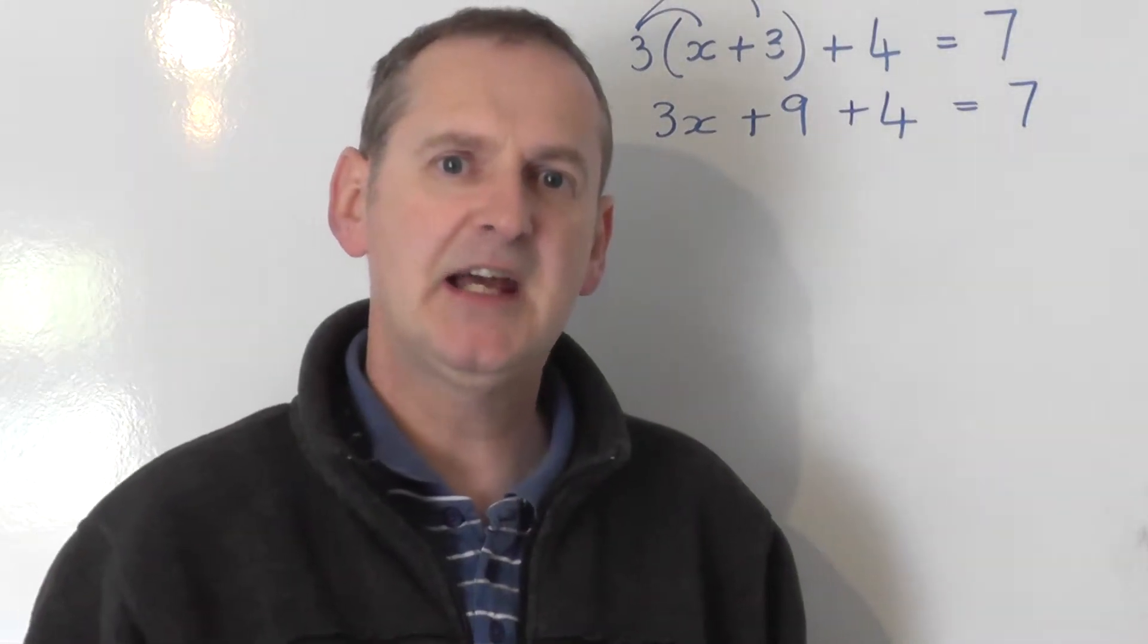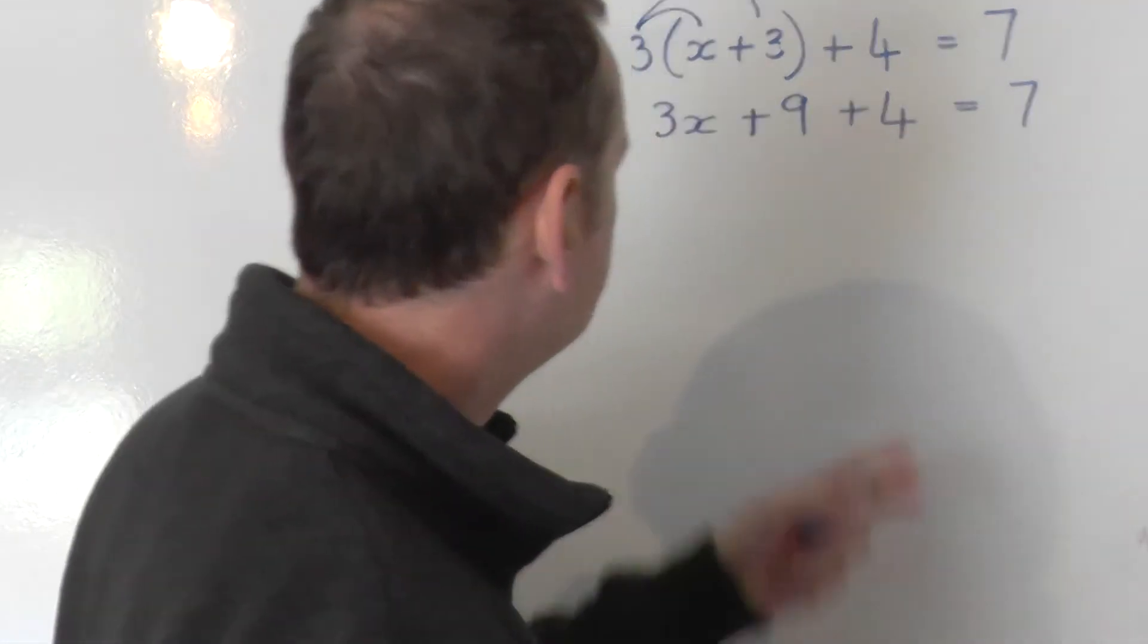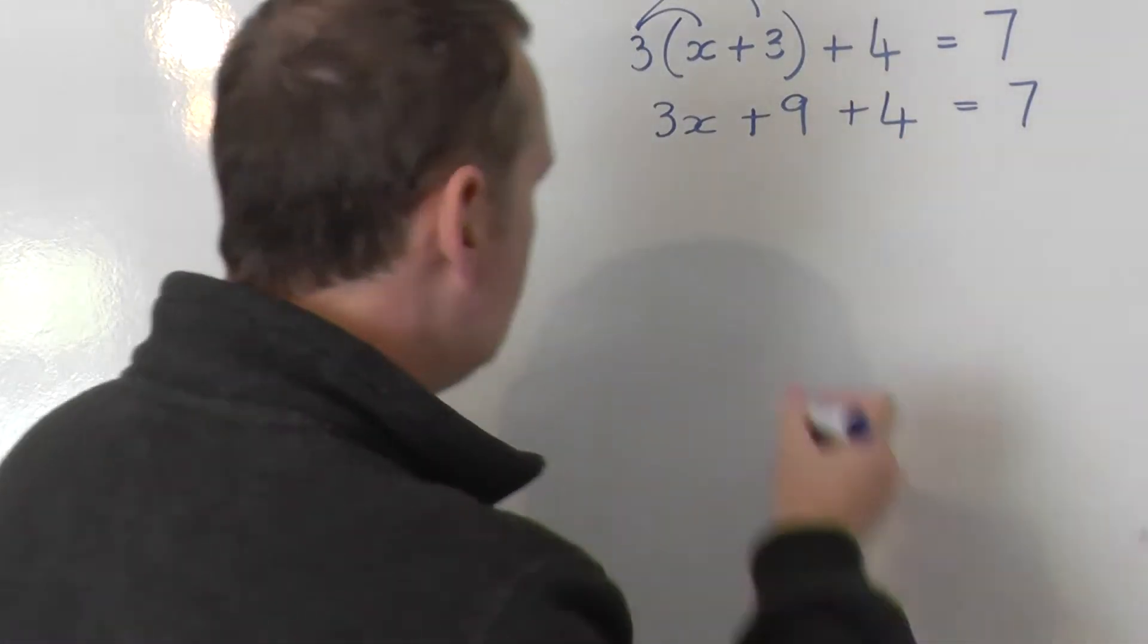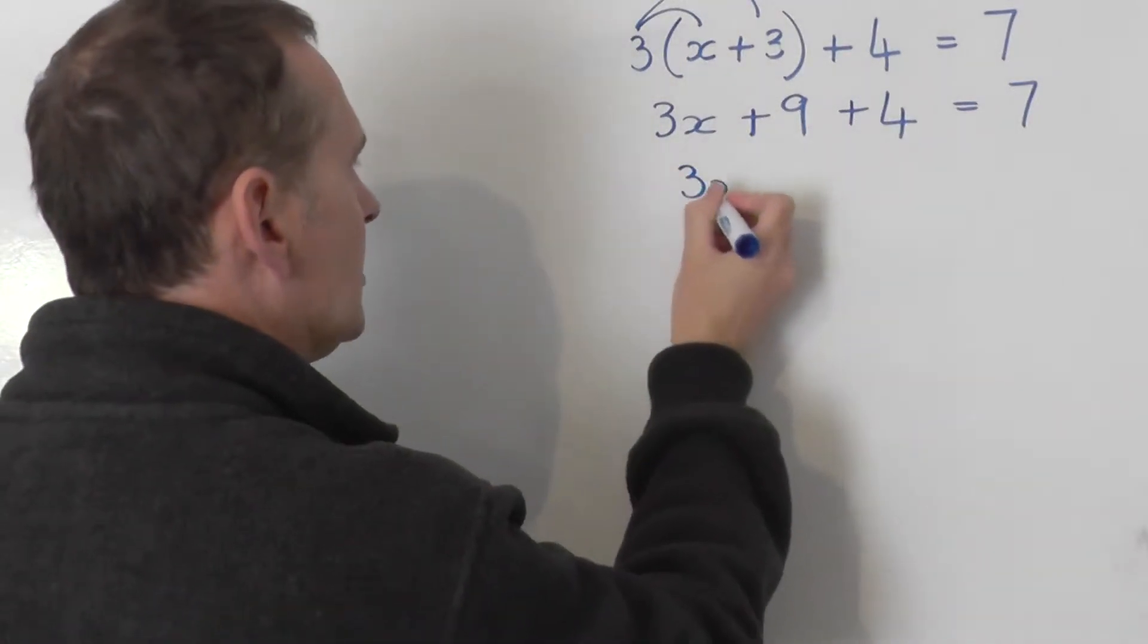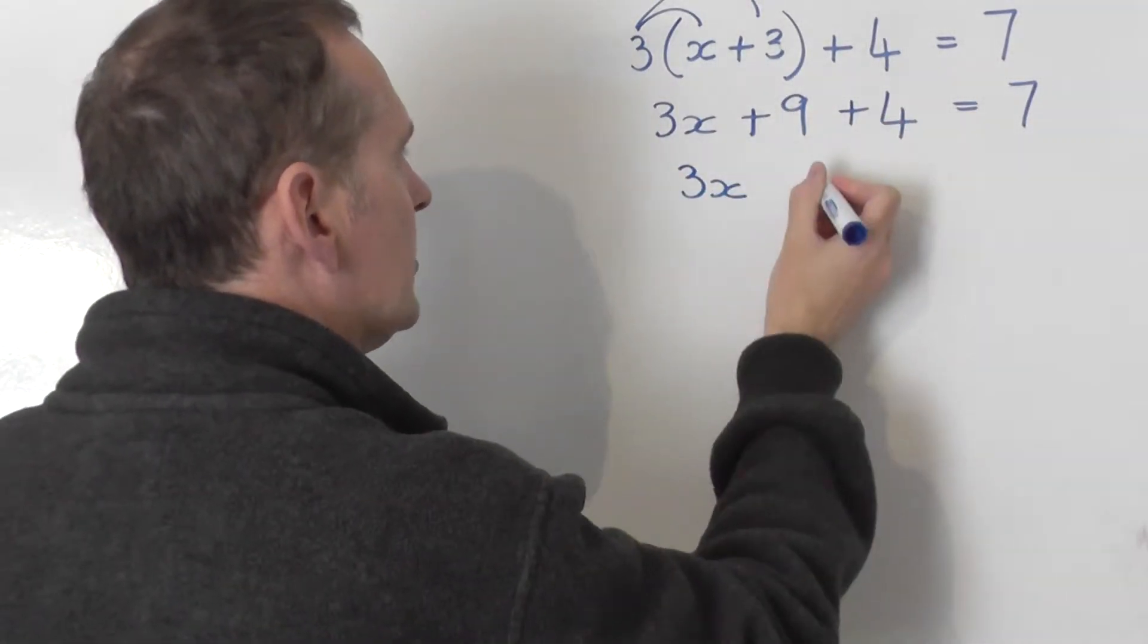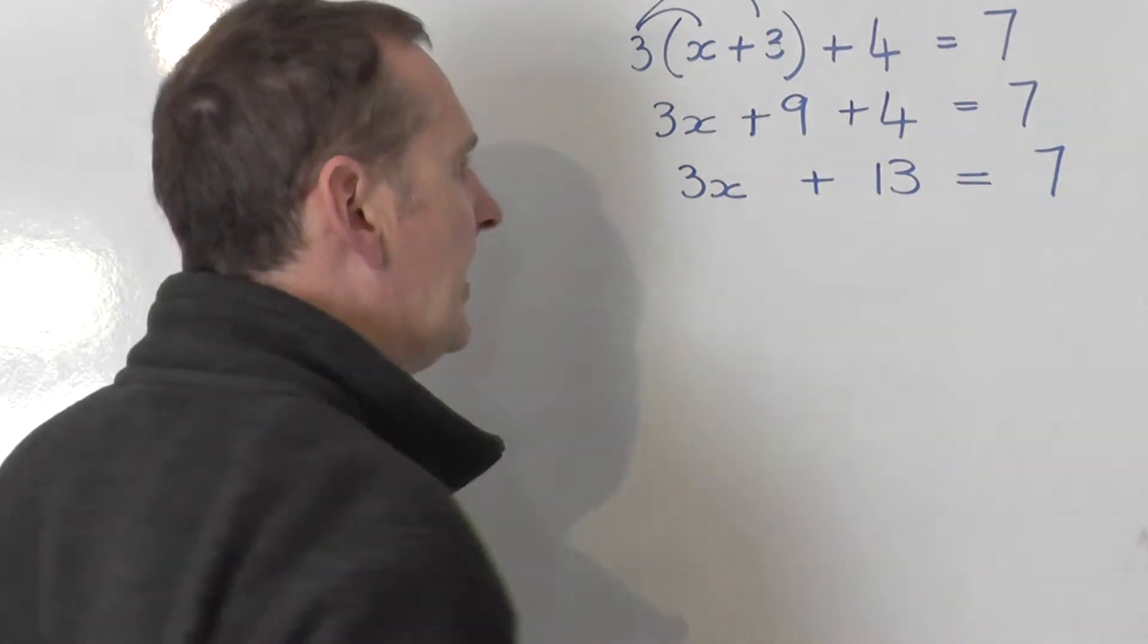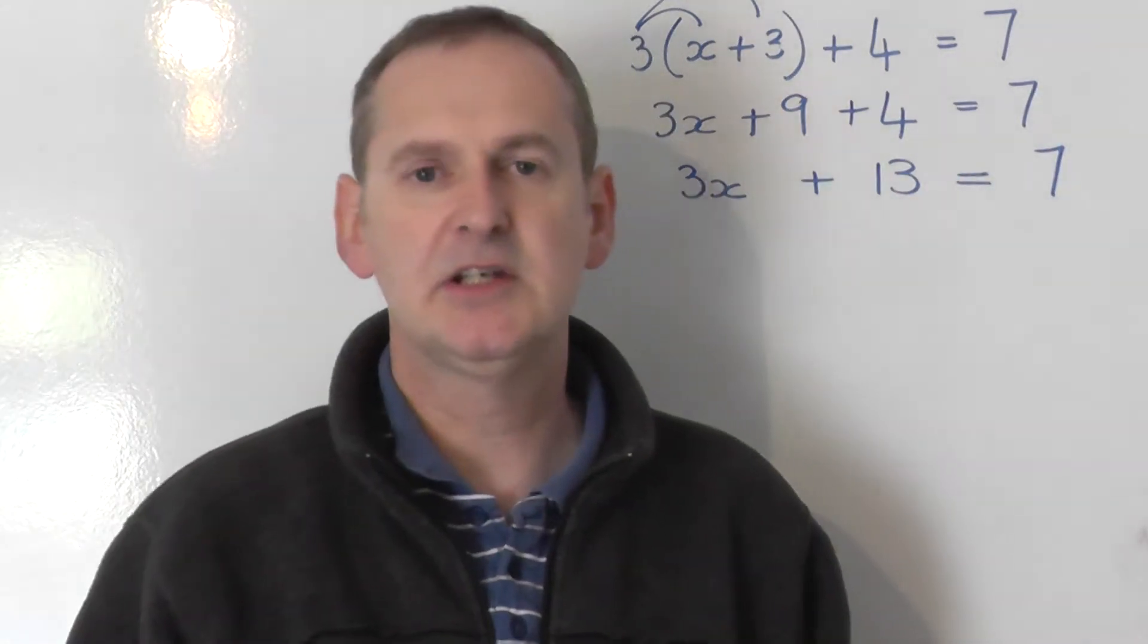OK, now let's tidy things up a little bit. On the left hand side you can see we've got two numbers and those two numbers can go together. So I would tidy things up. I'd leave the 3x alone and the plus 9 and the plus 4 can go together to get plus 13. And equals 7 I'll leave alone on the right hand side.